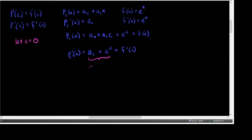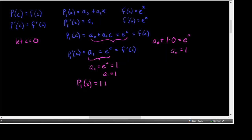Let's let the center be 0 for this problem. So A sub 1 equals E to the 0, which is 1. We now know A sub 1 is 1. Then using a C value of 0, A sub 0 plus A sub 1, which is 1, times C, which is 0, should equal E to the 0. So A sub 0 equals 1. As a result, our first degree polynomial is A sub 0, which is 1, plus A sub 1, which is 1, times X. So, 1 plus X.